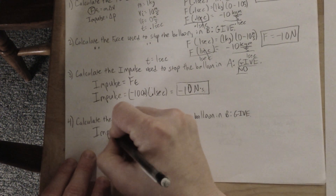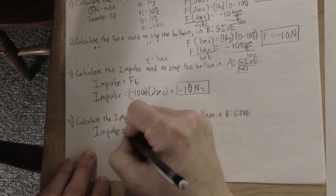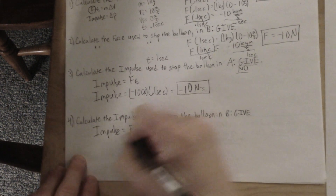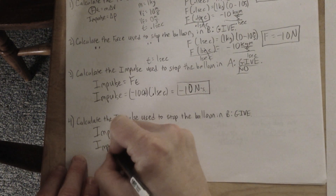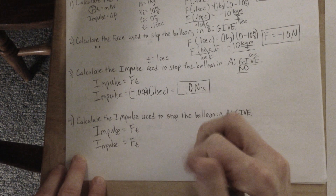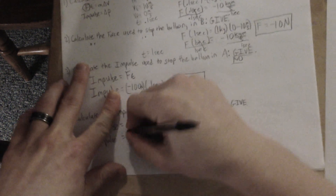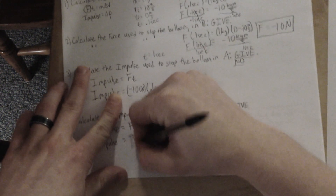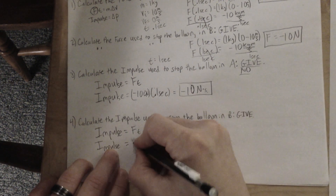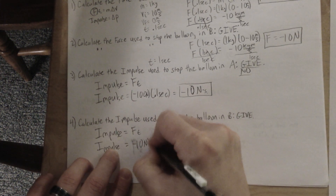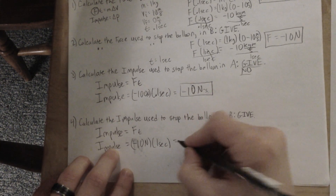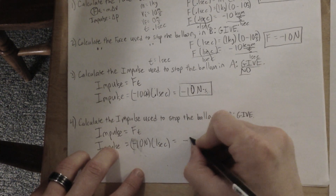Now calculate the impulse in situation B, giving with the balloon. Impulse equals FT. The force is negative 10 newtons and the time is one whole second. Negative 10 times 1 is negative 10 newton-seconds.